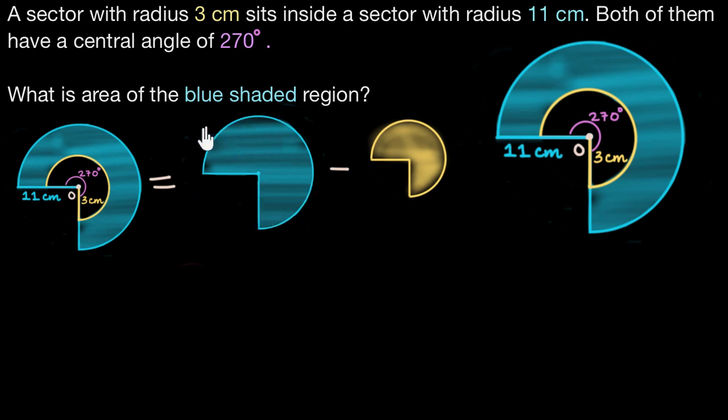So we know that a sector is a portion of a complete circle. And in a complete circle we have 360 degrees and the area covered in 360 degrees, or the area of a circle, is π r squared.